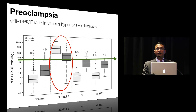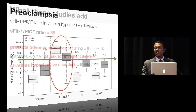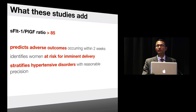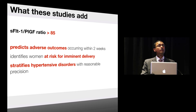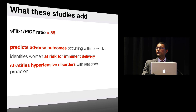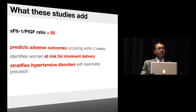What these studies collectively suggest is that a ratio greater than 85 is able to predict adverse outcomes occurring within two weeks, identifies women at greater risk for imminent delivery, and is able to stratify hypertensive disorders of pregnancy with reasonable precision.